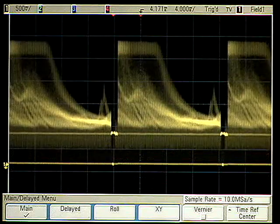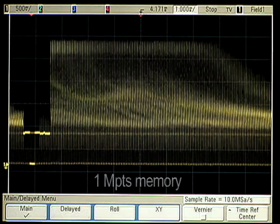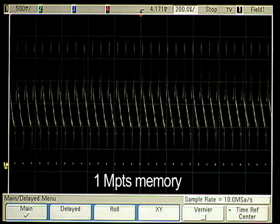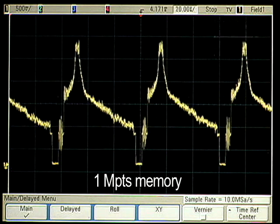Now, let's stop the acquisitions and zoom in on the data. As we see, Agilent's 1 megapoint of responsive deep memory provides clear waveform details on individual cycles.